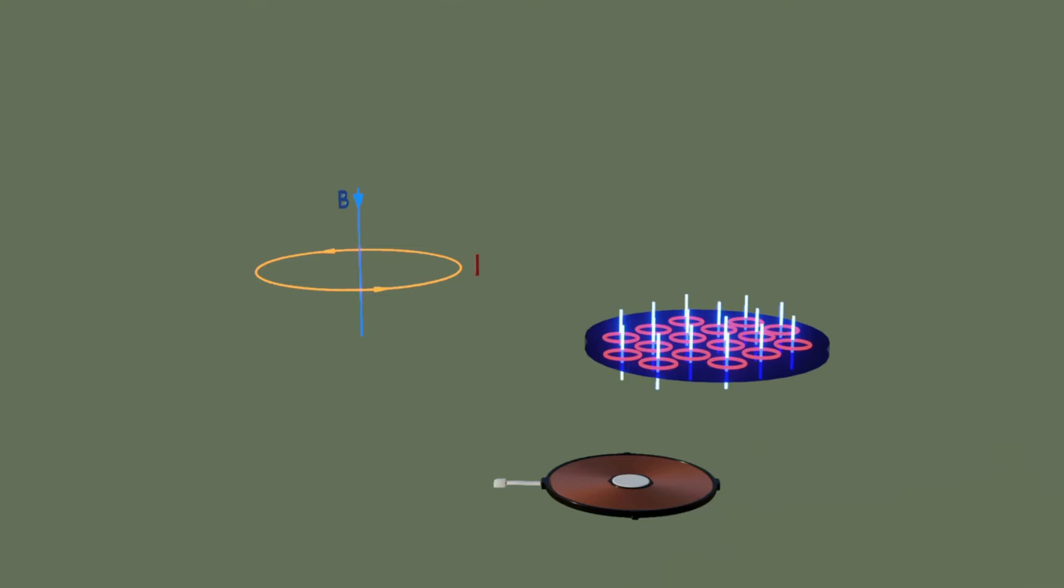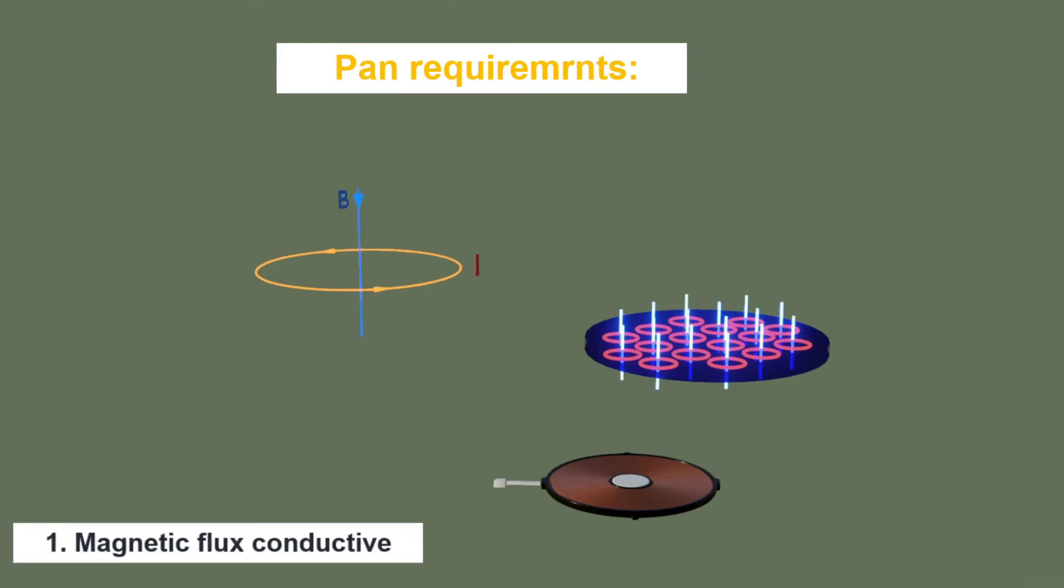Since the pan itself is part of the energy conversion, there are also some requirements for the pan. First, it has to be very good at conducting magnetic flux. This can enhance the energy conversion and avoid magnetic flux leakage.